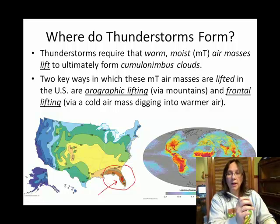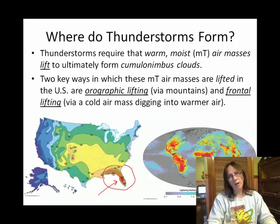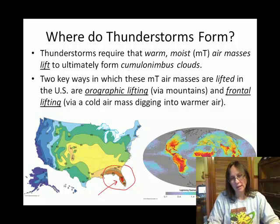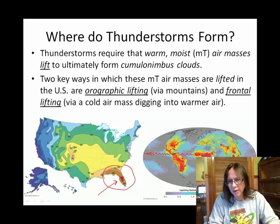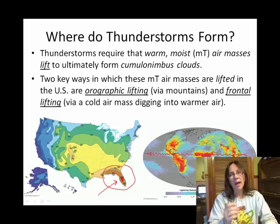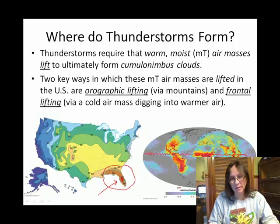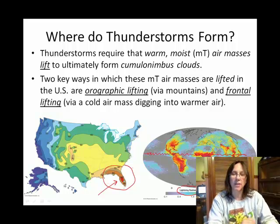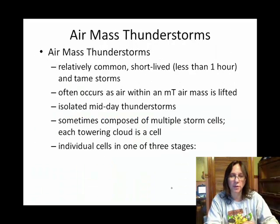Worldwide, this is generally where we see our thunderstorms. This is probably a composite throughout the year. You would think the intertropical convergence zone would be a good place to get thunderstorms. Actually, this isn't just thunderstorms — this specifically shows lightning flash data.